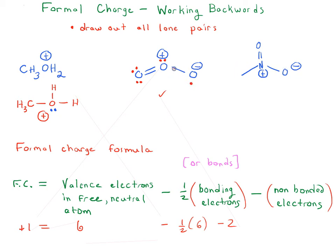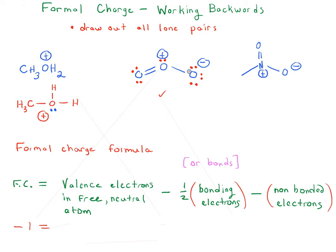We have oxygen here with one bond and a negative charge. It's still going to have a full octet, so you can draw in three lone pairs — that does give it a full octet. Just to double check: the charge is minus one, we have six valence electrons in free oxygen, one-half times two is one, and we have a total of six non-bonded electrons. Six minus one minus six does give you minus one, so that's also correct.